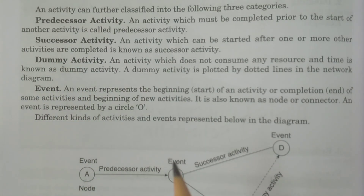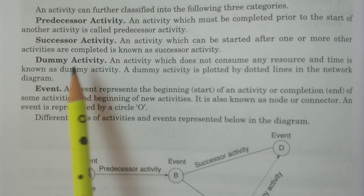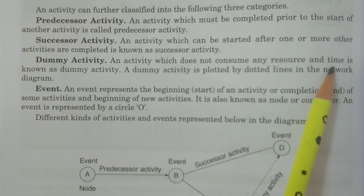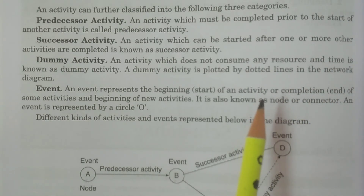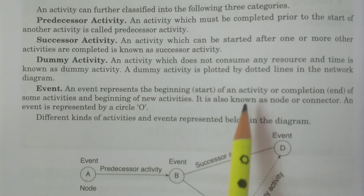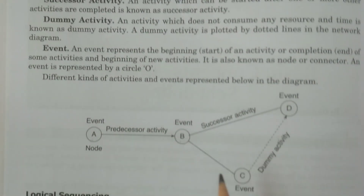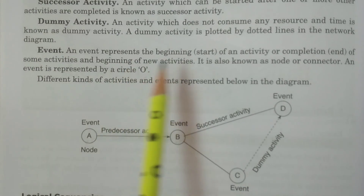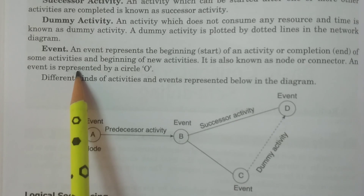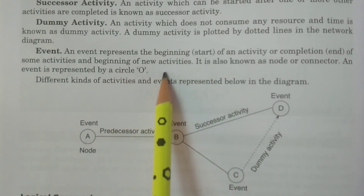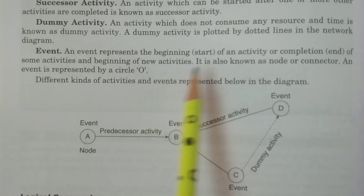A dummy activity does not consume time or resources. It is introduced for a few specific purposes and is plotted by dotted lines. An event represents the beginning or completion of an activity. It is also known as a node or connector.